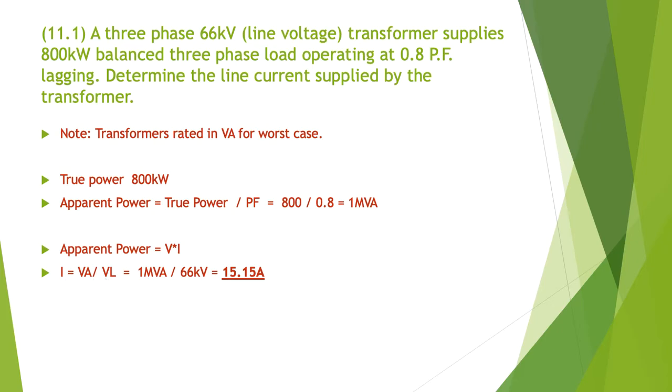They've given us the voltage, so our one MVA divided by 66 kV comes out at 15.15 amps.